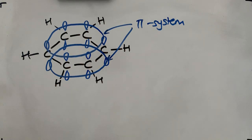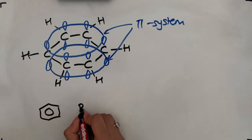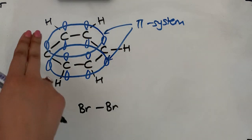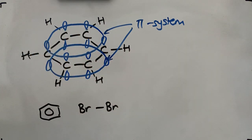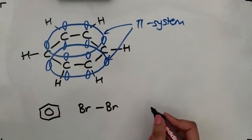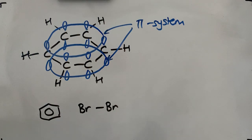When it comes to the reactions of benzene — for example, the reaction of benzene with bromine — we know that this reaction doesn't occur at room temperature and pressure without a catalyst. The reason is that the pi system is not electron rich enough to induce a dipole across the bromine-bromine bond. If no dipole occurs, electrophilic substitution cannot take place, so we have to have a halogen carrier present.